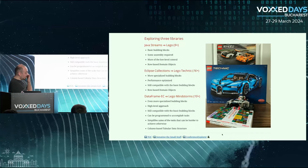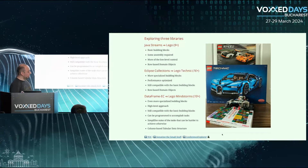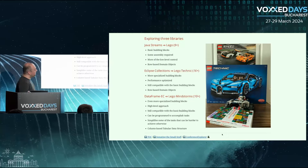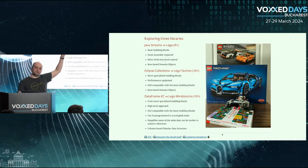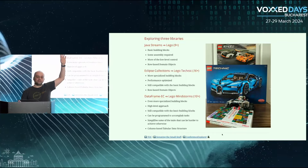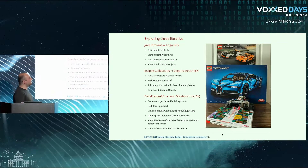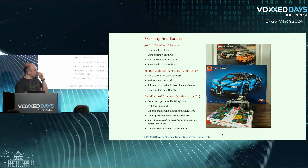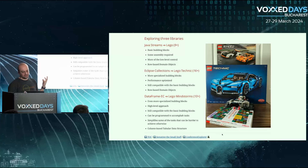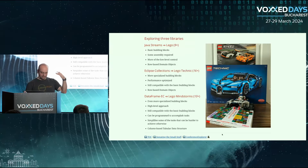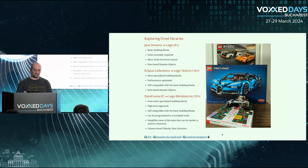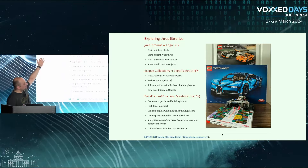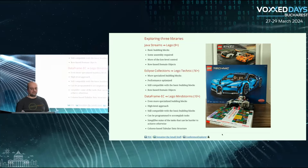Let me introduce the three libraries using a Lego analogy. Java Streams is like basic Lego — lots of building blocks you can combine in various ways. You get a fairly standard result, but you can build cars, buildings, or boats. It requires some assembly, gives you low-level control, is a row-based domain object approach, and is accessible to everyone — you don't need to be very experienced to use it.